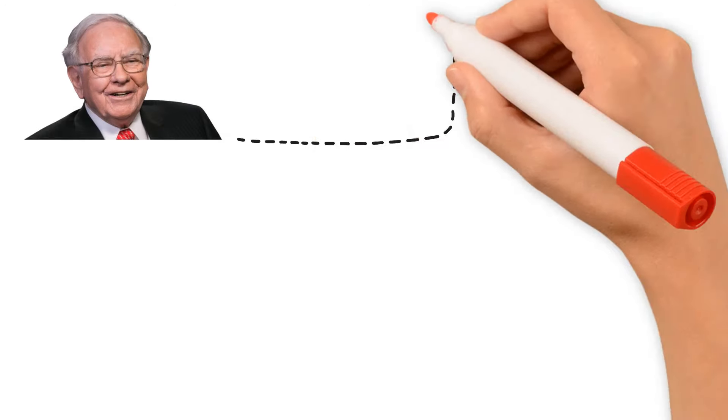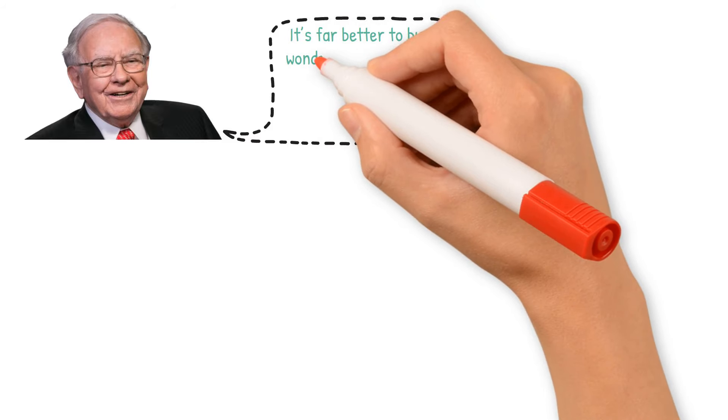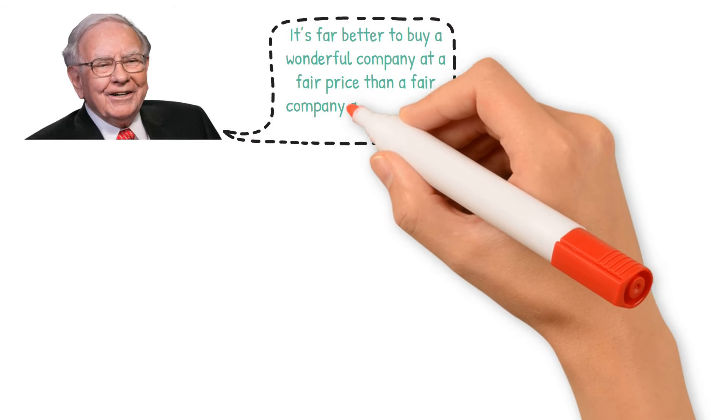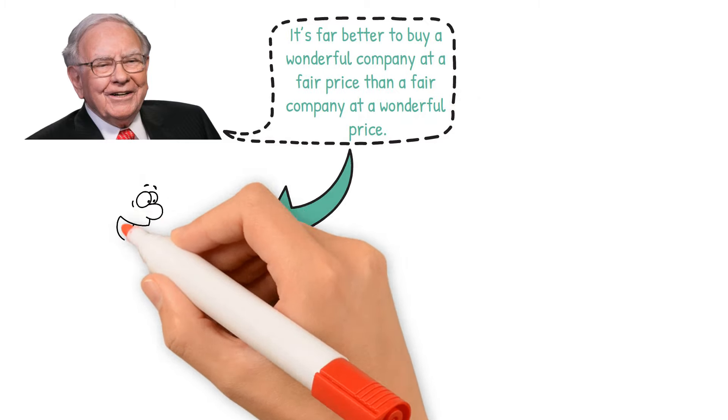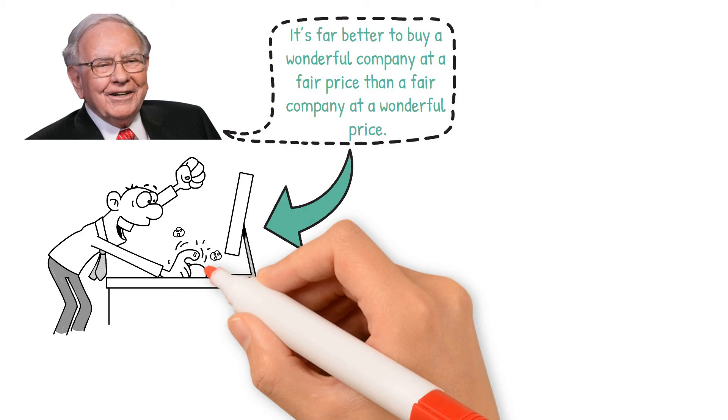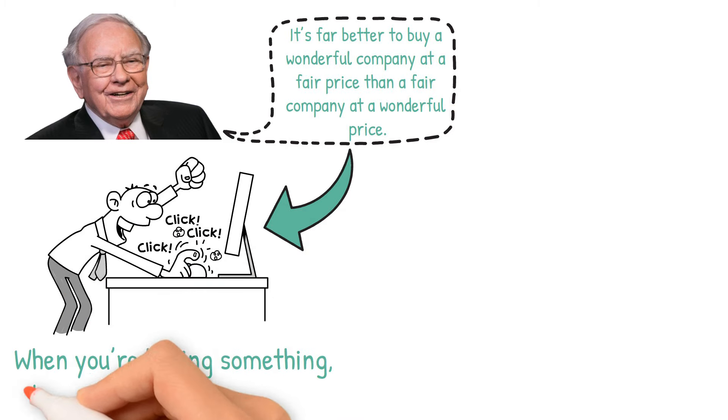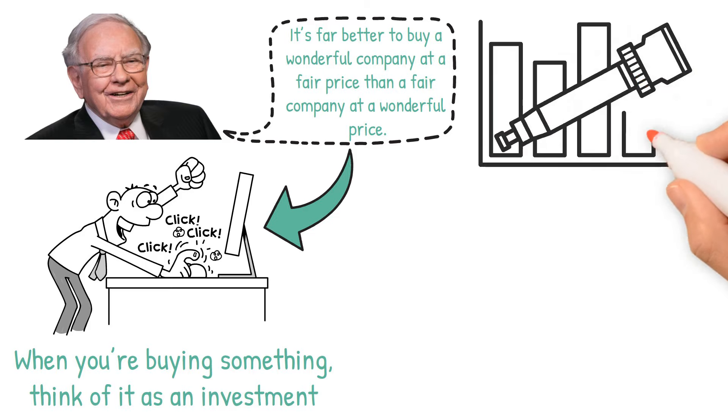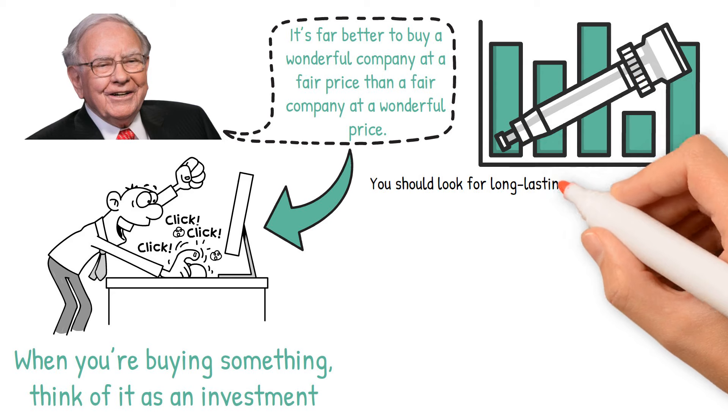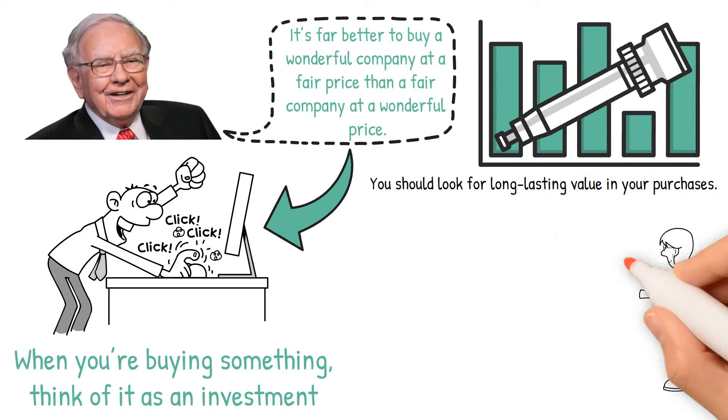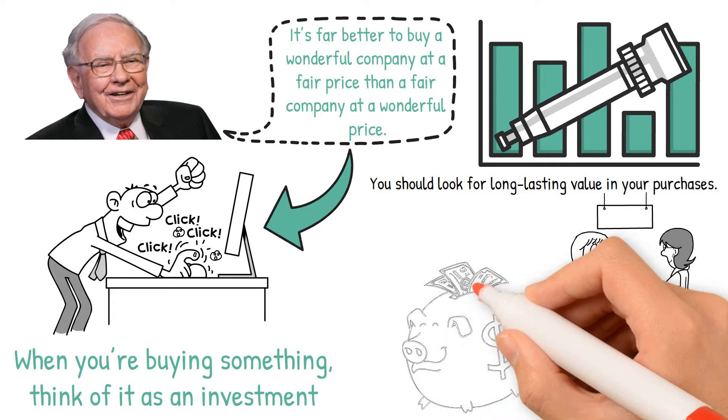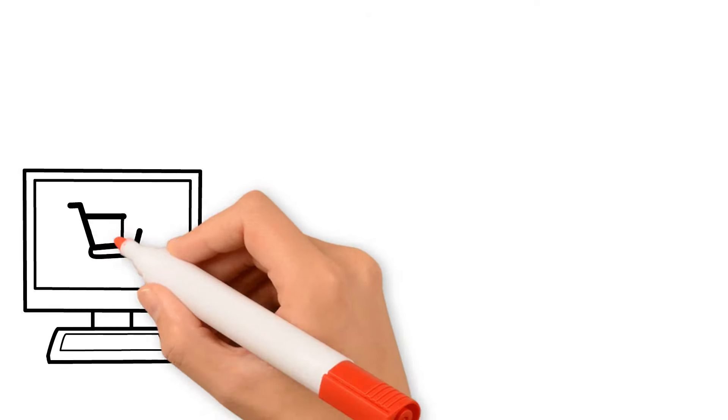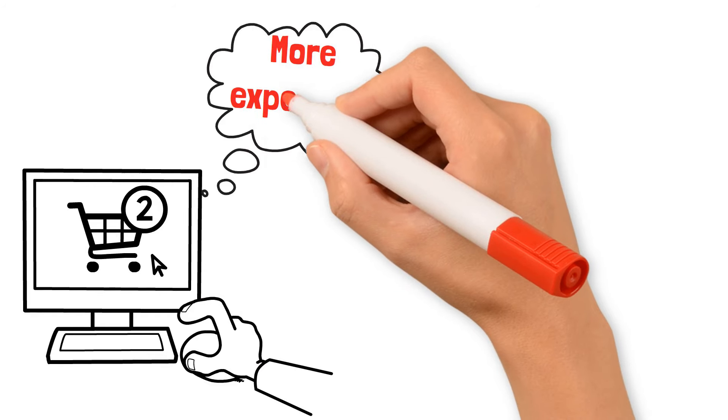Buffett encapsulates this idea with the saying, it's far better to buy a wonderful company at a fair price than a fair company at a wonderful price. This isn't just about stocks, it's a principle that applies to everyday purchases. The idea is when you're buying something, think of it as an investment. Just like Buffett looks for long-term value in his investments, you should look for long-lasting value in your purchases. It might mean spending a bit more up front, but if the item lasts longer, you actually save money over time. Constantly replacing poor quality items can be more expensive in the long run.